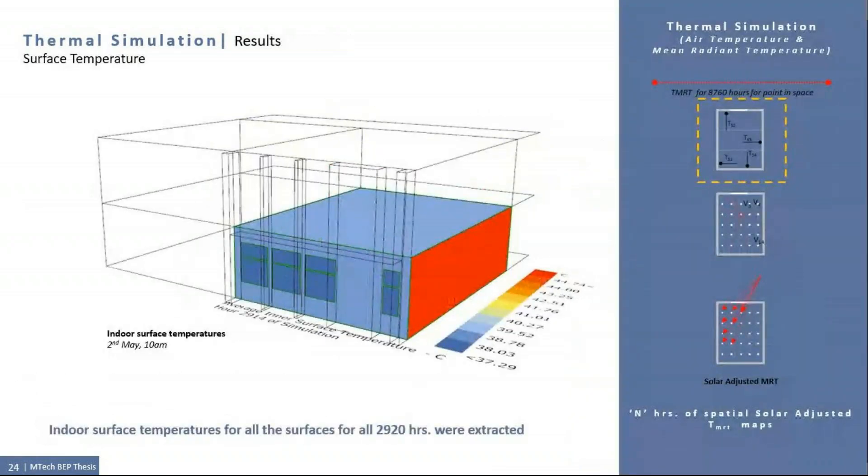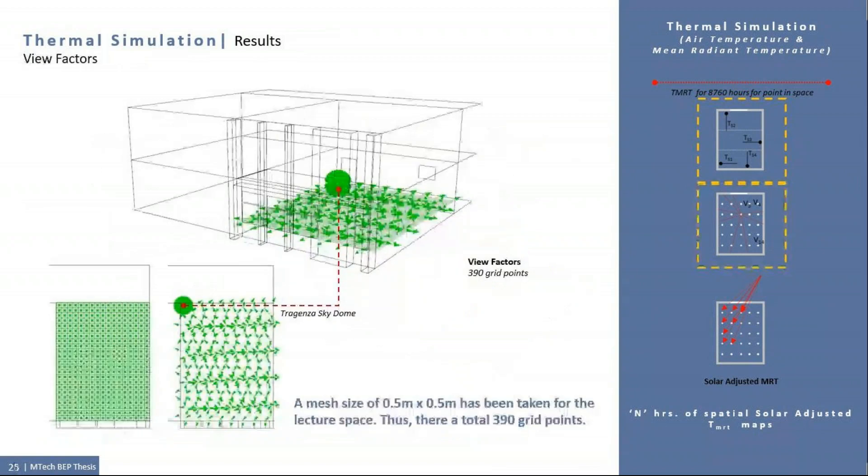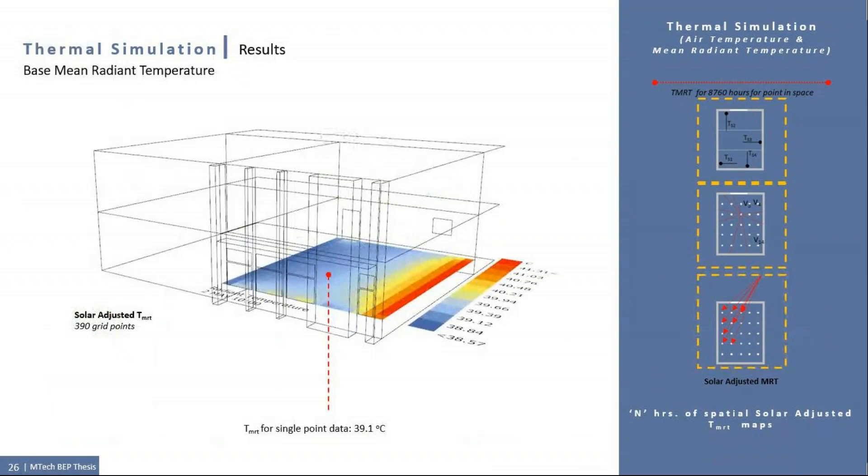Following are the results of surface temperature on 2nd May. The eastern exposed side has highest indoor surface temperature of 44 degrees Celsius. Indoor surface temperature for all the surfaces for all the 2920 hours were extracted. This was followed by view factor calculation. The view vectors for every point are generated which will be used to calculate MRT. A mesh size of 0.5 meter by 0.5 meter has been taken for this lecture space, giving us a total of 390 grid points. The figure above shows the distribution of the solar adjusted mean radiant temperature. And it can be observed that the eastern zone of the room experienced high radiant temperatures compared to the other parts of the room.